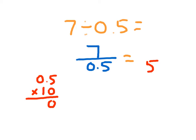I'll show my work there. 0.5 has 1 decimal place, so I multiplied by 10 in my denominator. What would I have to multiply in my numerator by? Right — 10. So 7 times 10 is 70.